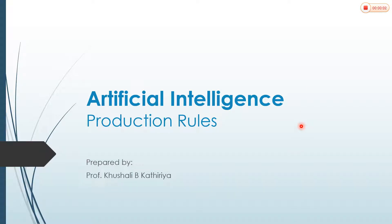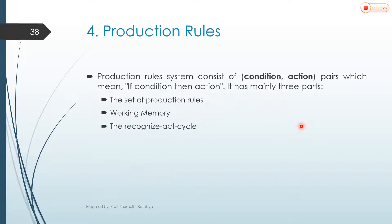Hello everyone. This is the fourth type of knowledge representation: production rules. A production rule is the widest method for representing knowledge. It is also known as if-then rules. A production system consists of condition and action pairs.